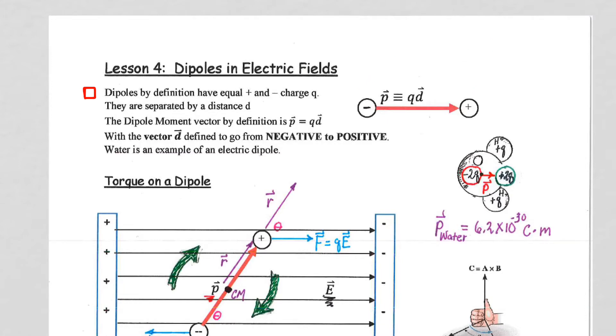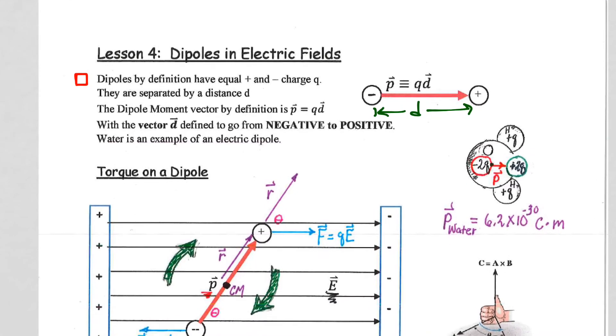Dipoles are separated by a distance d. For right now, just the definition of the dipole moment vector p. This red vector p that I have drawn here will be very important to us. By definition, it equals the charge,